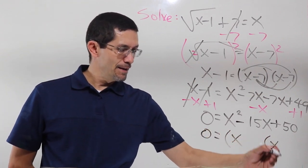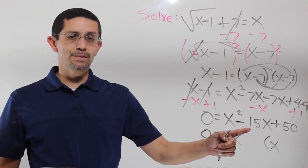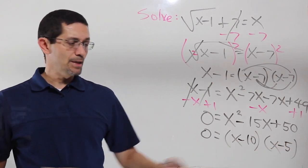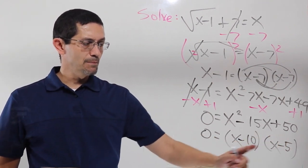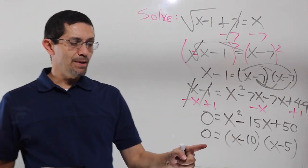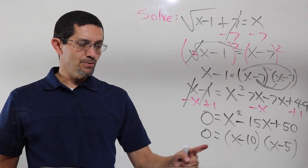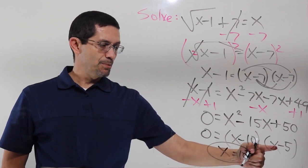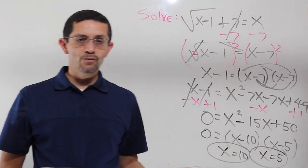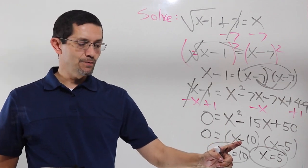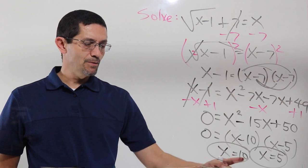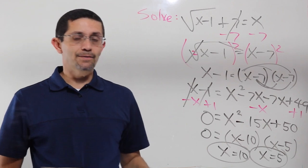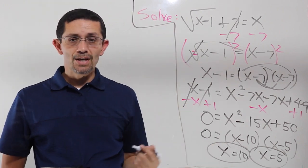Quadratic equation — product and sum. Two numbers that multiply to get 50 but add to get negative 15. The numbers are 10 and 5. Because the sum is negative, both have to be negative. Negative 10 times negative 5 is 50, negative 10 minus 5 is negative 15. So make it equal to 0: plus 10, plus 10 — x equals 10; plus 5, plus 5 — x equals 5. The value of x is always the opposite sign of the factor. So the values are 10 and 5. Now I need to double check each answer.